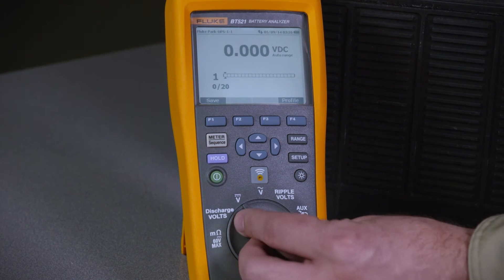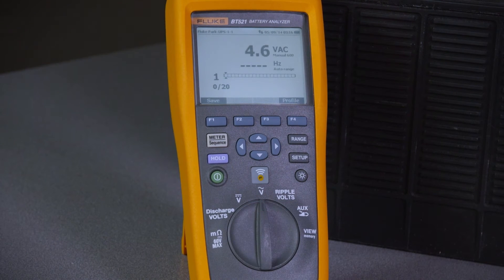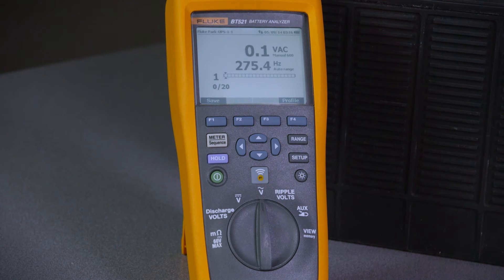The next mode on the dial is the AC voltage. This is useful for measuring input to the charging system, which may be charging the battery.